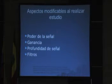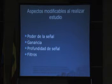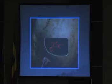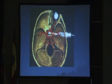Al realizar el estudio y medir la información, están la ganancia, el poder de la señal, la profundidad y los filtros que se utilicen. Básicamente se coloca una sondita y se observa la velocidad que tiene cada eritrocito al pasar por un vaso sanguíneo, cómo se refleja. Esta sonda toma la velocidad y lo traduce a un sistema de monitoreo.